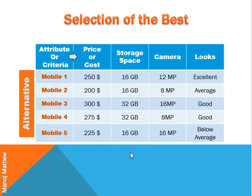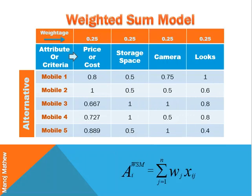This is a situation in which we are selecting the best mobile out of five available alternatives based on four criteria: price, storage space, camera quality, and looks. We did the normalization and got a normalized decision matrix.